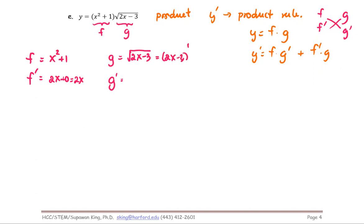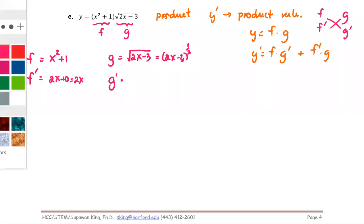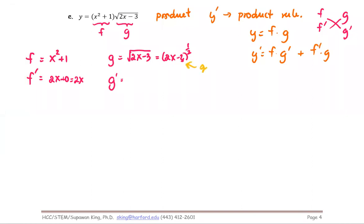For g prime, rewrite the radical as a power first: g is two x minus three to the power one half. We have the entire function raised to the power one half, so this time we need to apply the general power rule, not just the basic power rule.